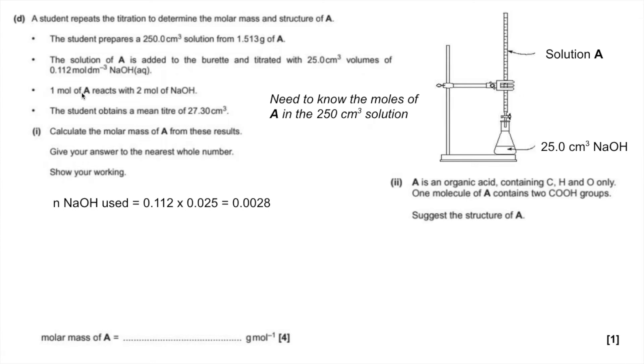We've then got this information: one mole of A reacts with two moles of sodium hydroxide. So to get the moles of A in the titration, we half that 0.0028. The number of moles of A in the mean titre 27.30 is 0.0014. Now what we need to do is scale up to how many moles would have been in the 250 solution. We're going to divide the moles in the titre by the titre - that's going to give us the moles in one cm³. If we multiply that by 250, that'll scale it up to the volumetric flask. That comes out to 0.0128 moles of A in the 250.